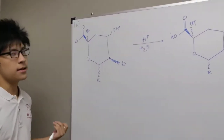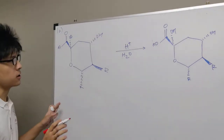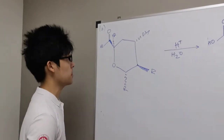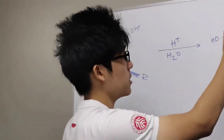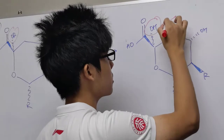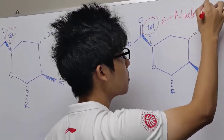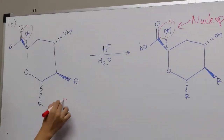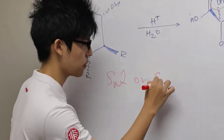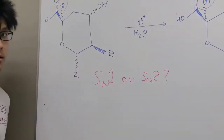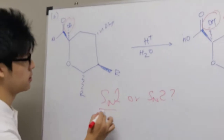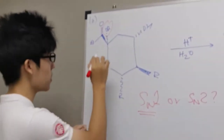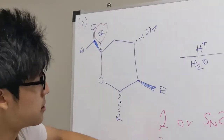The question says that this is a hydrolysis reaction, but let's simplify. What is actually happening here? What we notice is that this is actually a nucleophilic substitution. This OR group is substituted with OH, and OH is our nucleophile. So now the question is: is this SN1 or SN2? This reaction is actually an SN1 reaction because the carbocation formed in the first step is resonance stabilized.